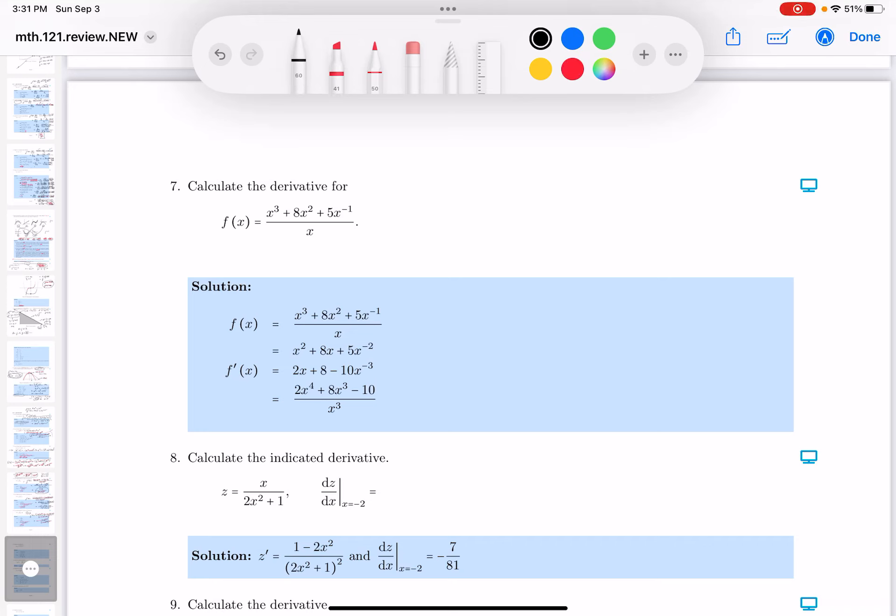All right, so this one over here, you could use the quotient rule on it. What I would do first, I would probably simplify the problem. In other words, it's a monomial divisor. It's easy to divide by that.